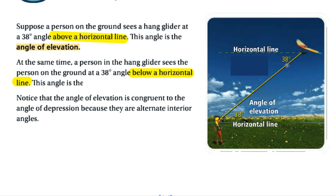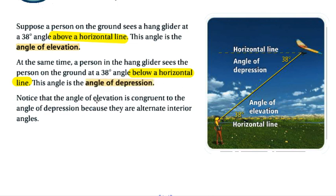What if we have a person in the hang glider looking down at the person on the ground? That angle would be called an angle of depression because it is measured below a horizontal line. Notice the horizontal line — the angle goes below that, which defines an angle of depression. If it's going above that horizontal line, it is an angle of elevation.